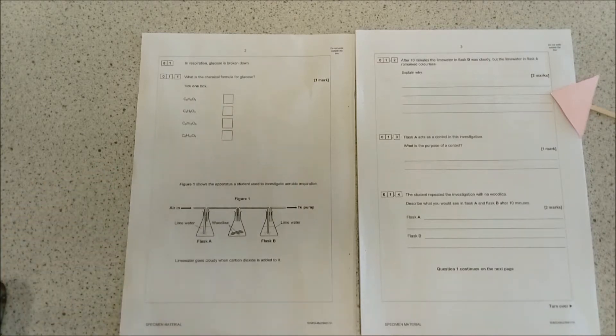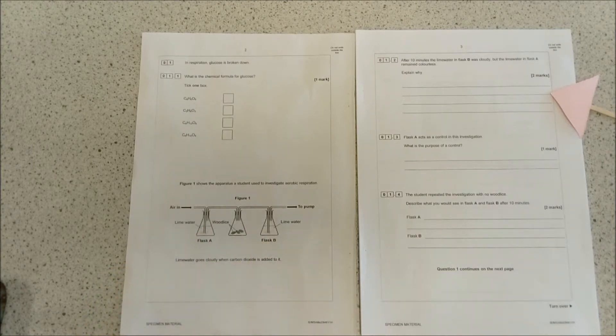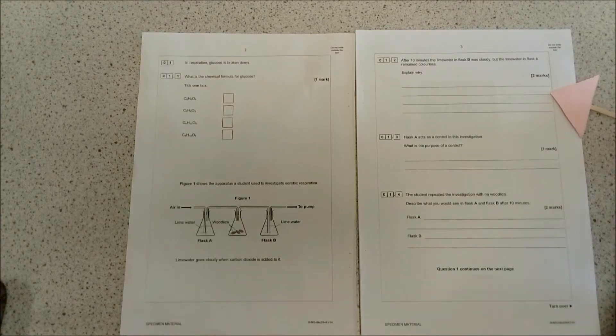To answer this, you need to talk about: in flask A, you're getting air coming straight from the outside, so there's going to be no extra carbon dioxide in it, whereas in flask B, you're going to have extra carbon dioxide made by the wood lice, which will react with lime water and turn it milky white, proving that the wood lice are respiring and that carbon dioxide is produced during respiration.